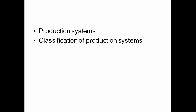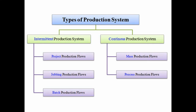The nature of production systems differs from company to company depending on how much output they generate and when it is required. Based on this, we can classify production systems as intermediate production systems and continuous production systems. In the intermediate production system we have project production flows, jobbing production flows, and batch production flows. In the continuous production system, we have mass production flows and process production flows.